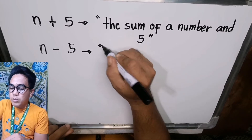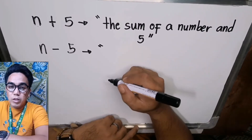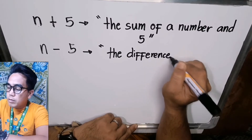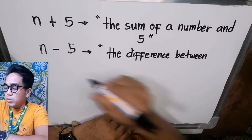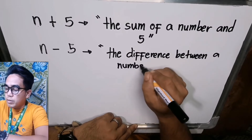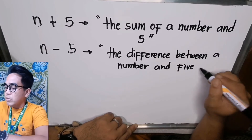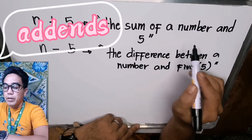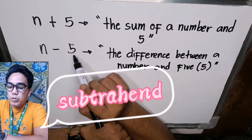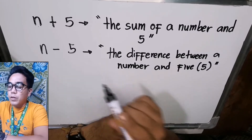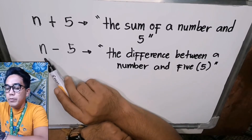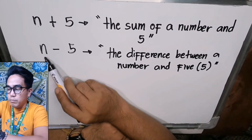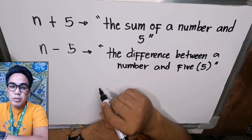Now, how about subtraction? When we hear the word subtraction, we can use the keyword 'difference.' The expression n minus five translates to 'the difference between a number and five.' Remember, in addition the order of the addends does not affect the result, but in subtraction the order of the minuend and subtrahend will affect the difference, so be careful. Following the order of the variable, operation, and constant, we use the pattern: 'the difference between a number and five.'